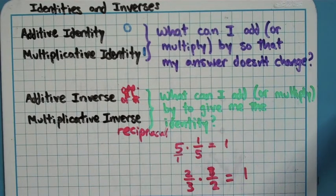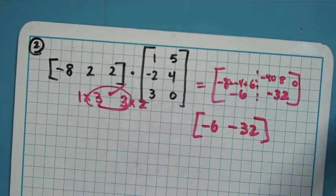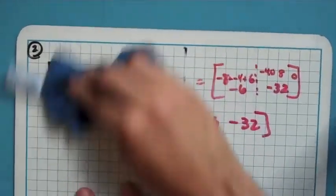And, that kind of works just fine when we're dealing with numbers. But, in this chapter, we're going to talk about these words, identity and inverse, with a matrix. And, I'm going to introduce that with adding in this video. We'll probably talk about multiplying in class before we discuss it on video.